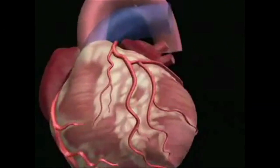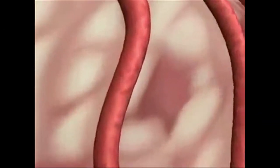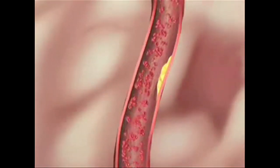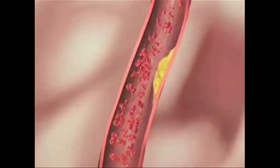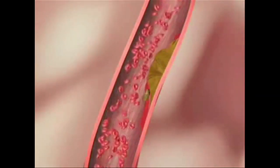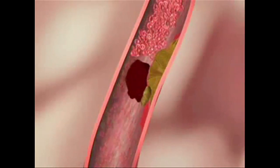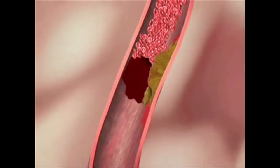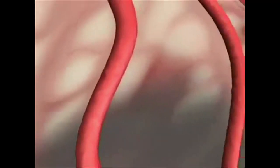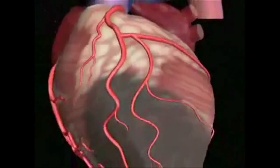The culprit responsible for your heart attack is called plaque. Plaques are fatty deposits that line the arteries that feed blood to your heart. Over time, the plaques enlarge and narrow the artery. A heart attack occurs when the plaque ruptures or explodes, causing a blood clot to form and totally close off the blood supply to an area of your heart. That darkened area can form a scar.